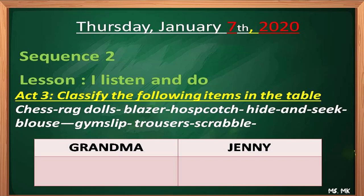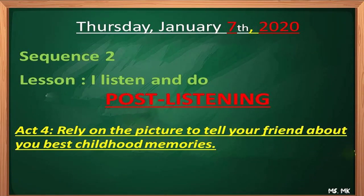The next activity is a classification. I've presented some clothing items and games items and asked my pupils to classify them in a table: grandma's items — ragdolls, blazer, hopscotch, hide and seek, blows, gym slip, trousers, and scrabble — and asked them to classify these items according to what they have listened to.